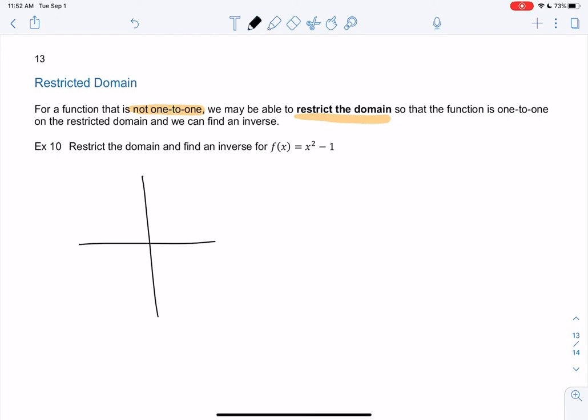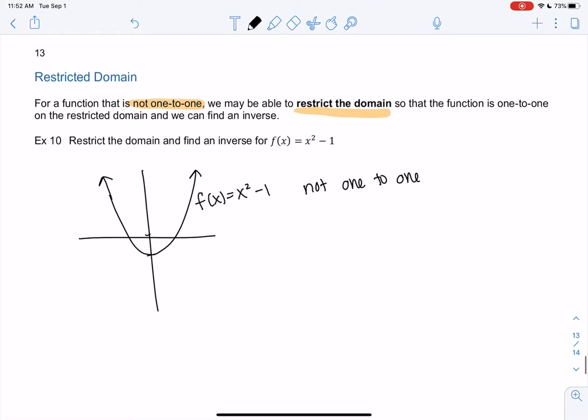So x squared minus 1 would be x squared, and then we just go down 1. So make sure you're getting better at those transformations so we can graph things fast. Notice it's not one-to-one. So as of now, if I find an inverse, it's not going to work. So what am I going to do?